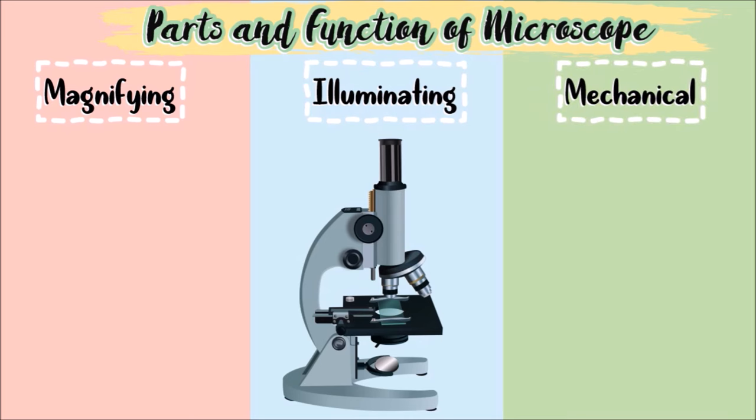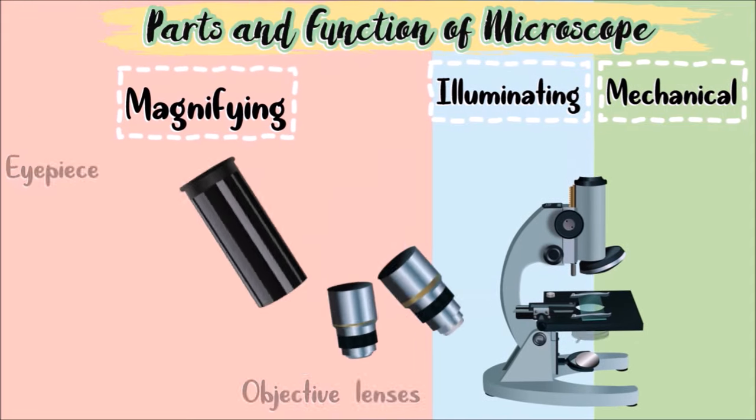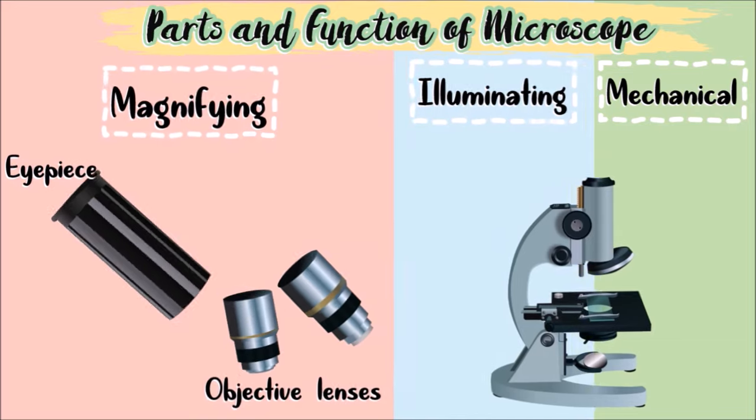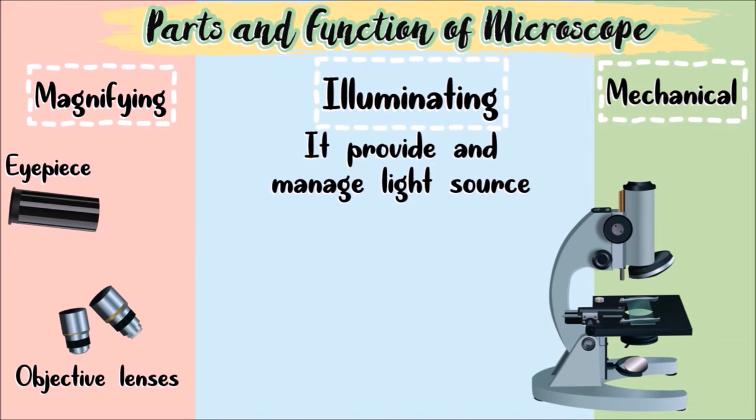The magnifying parts of the microscope includes the objective lenses and the eyepiece. The illuminating parts provide and manage the light source in order to clearly see the image of the object.